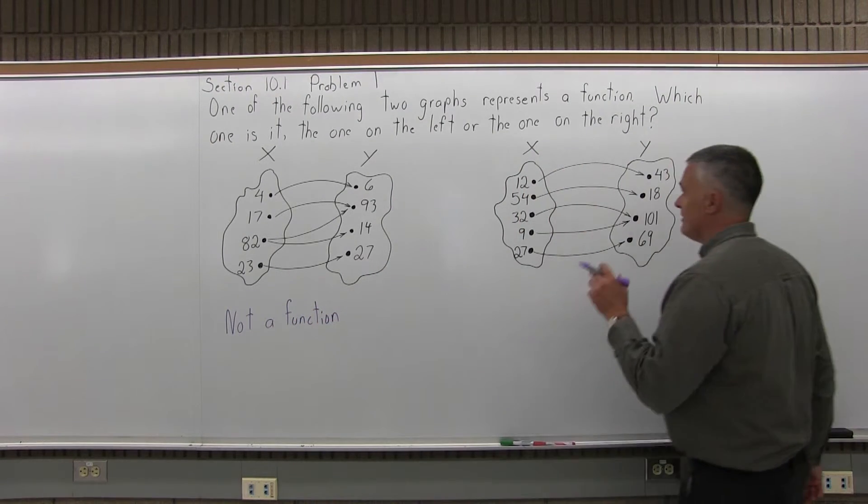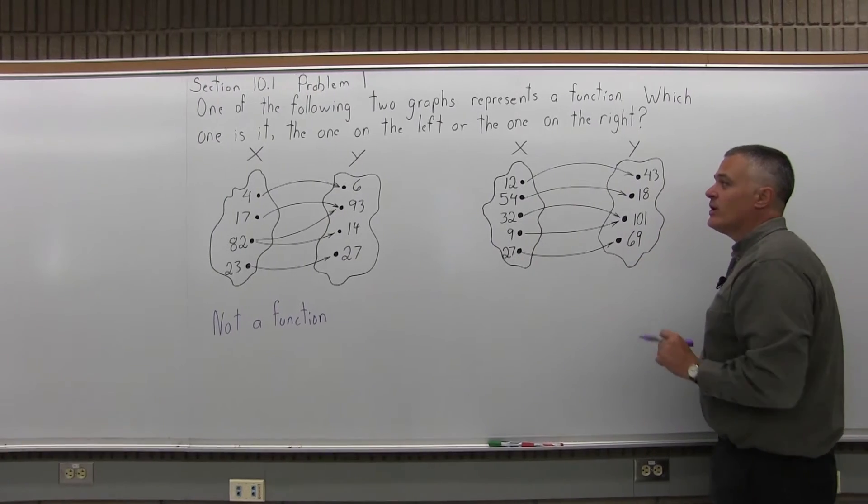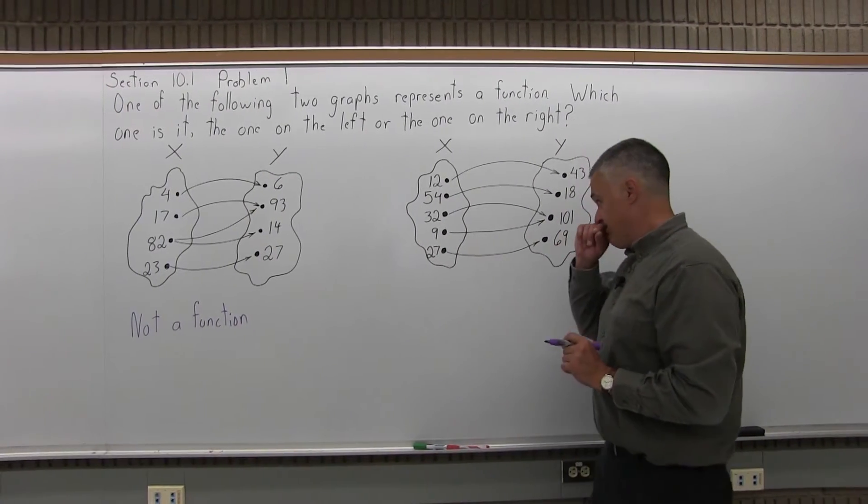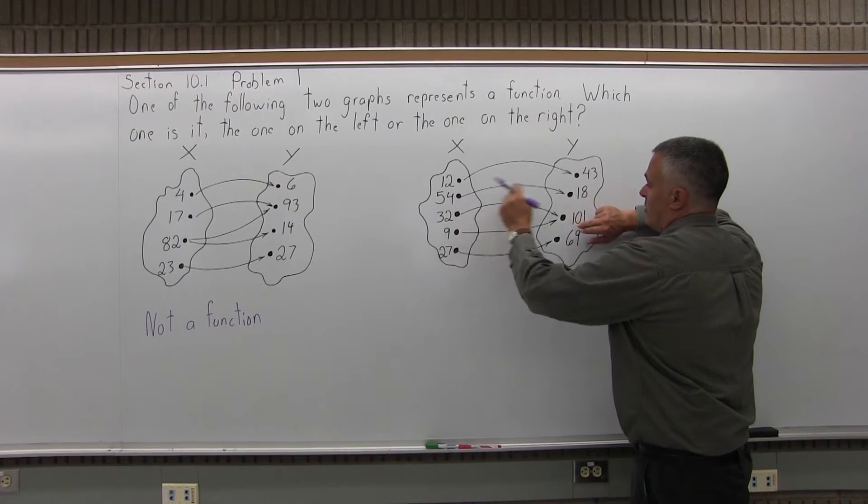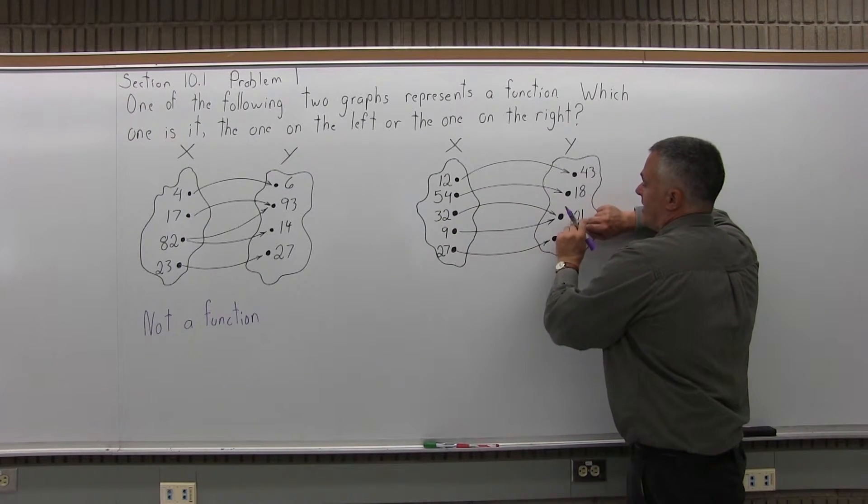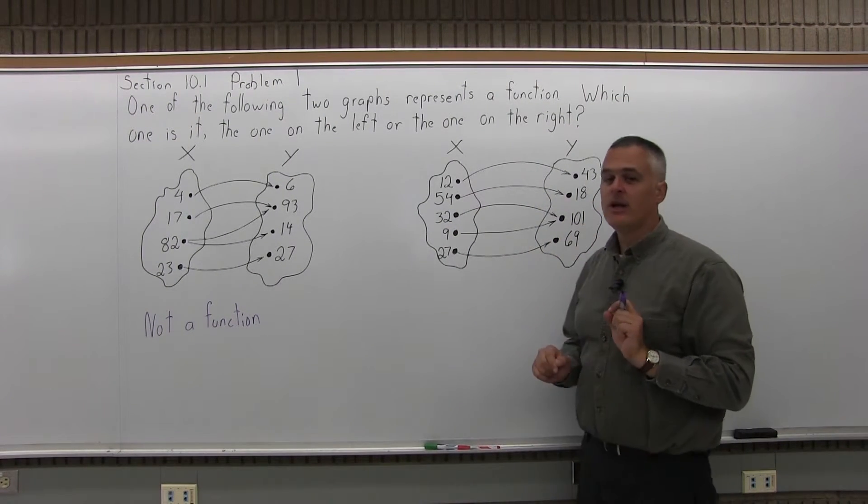Now if you look at the graph on the right, each X goes to only one Y. Now you do have a situation where if you put in a 32, you get out a 101. And if you put in a 9, you also get out a 101. That's okay.